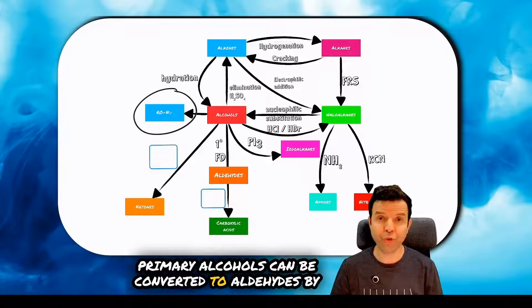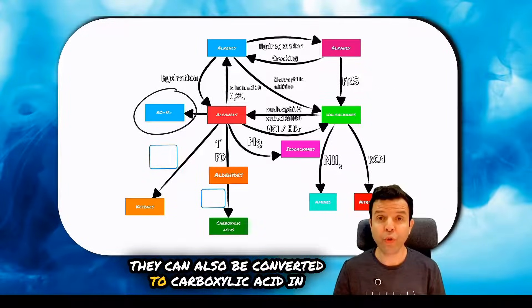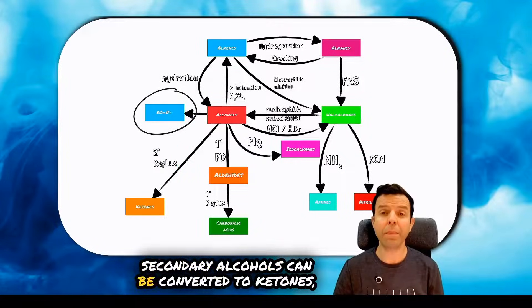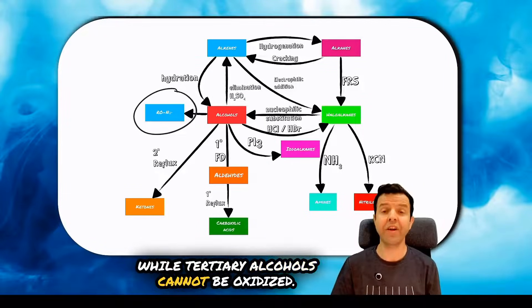Primary alcohols can be converted to aldehyde by fractional distillation. They can also be converted to carboxylic acid in a reflux condenser. Secondary alcohols can be converted to ketones, while tertiary alcohols cannot be oxidized.